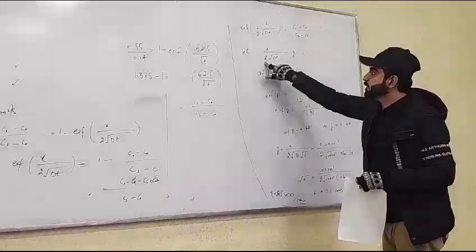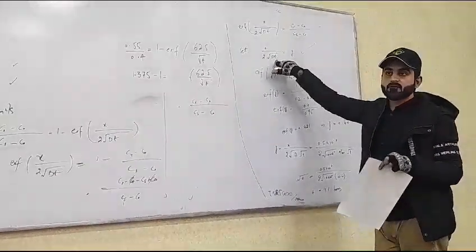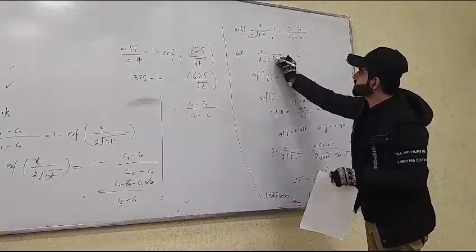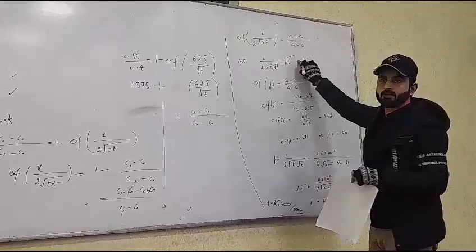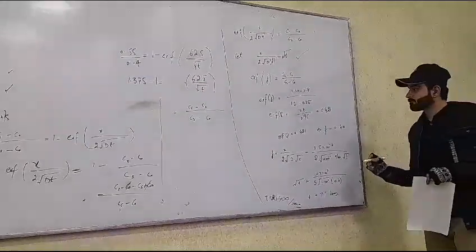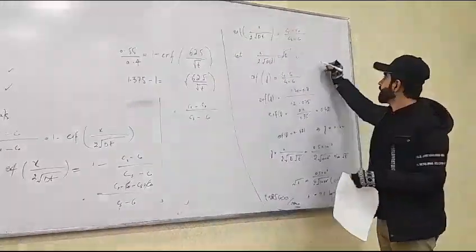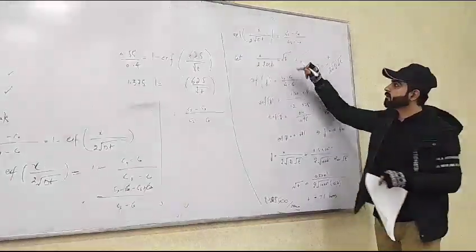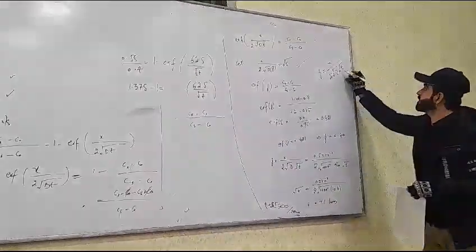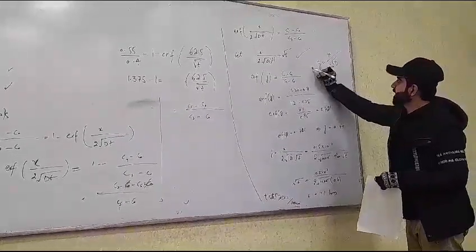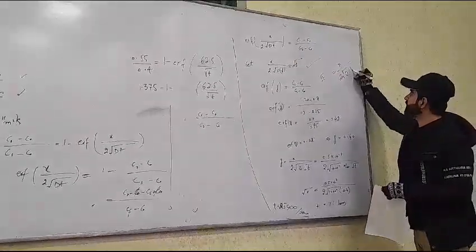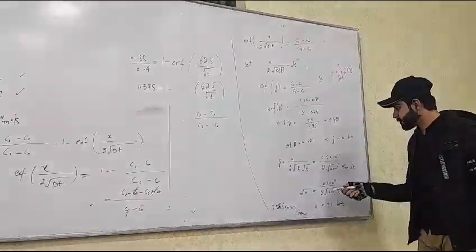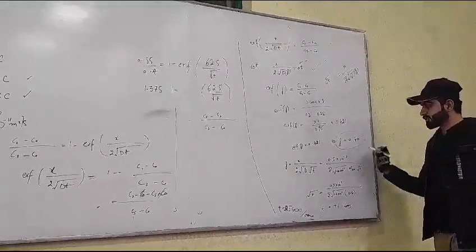Rearranging z = x / (2√D · √t), since √t is unknown, we isolate it: √t = x / (2 · √D · z). Note that z is not inside the square root — z = 0.40 is a separate known value used in the denominator.